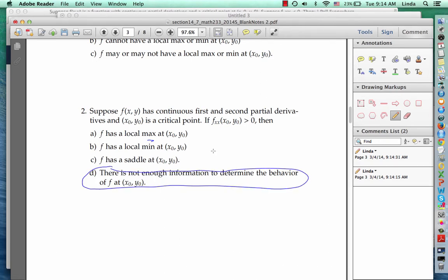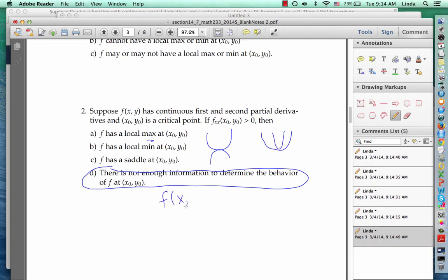Because f sub xx is positive, we know that f is concave up in the x direction, but in the y direction it could be concave down, giving us a saddle point, or it could be also concave up, giving us a local min, or we could have some function like f xy equals x squared.